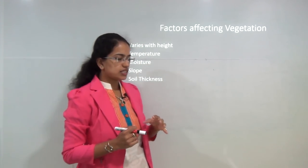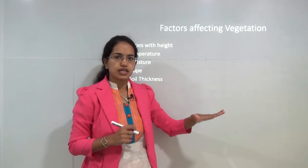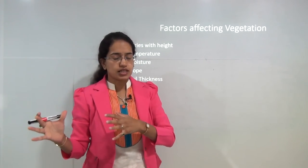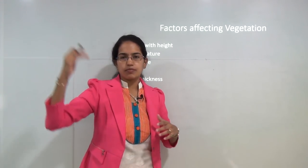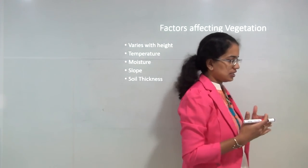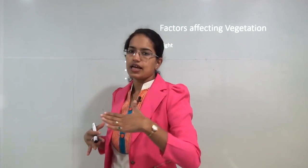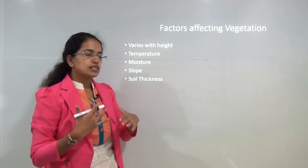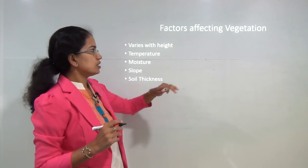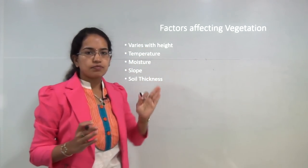The vegetation of an arid area — if I visit a desert area — would be very different from a region if I visit a grassland or a mountain top. So you have different vegetation seen across regions. Similarly, as I move up a mountain, there are changes in vegetation patterns that could be seen. All those are the various factors that affect the type of vegetation.